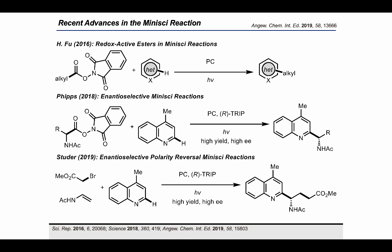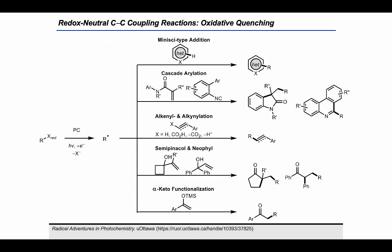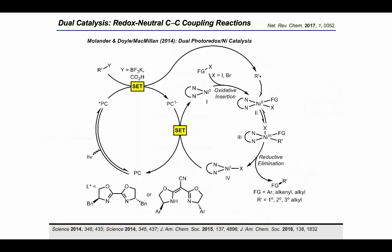Since publication, this field has seen many advances: Foo's use of redox-active esters, Phipps's use of chiral phosphonates to achieve the enantioselective Minisci reaction, and Studer's combination of polarity reversal radical additions with enantioselective methodology. The power of this strategy lies in its general application to a variety of reactions where reducible substrates can undergo transformations like cascade arylations, alkynyl and alkynylarylations, semi-pinacol and neophyll rearrangements, and alpha-ketal functionalization reactions.